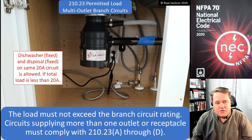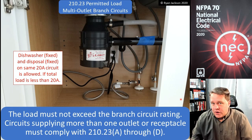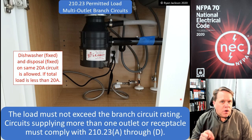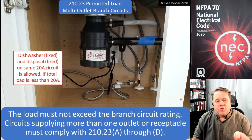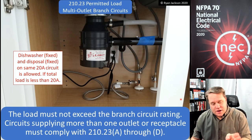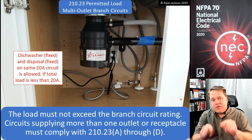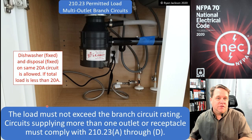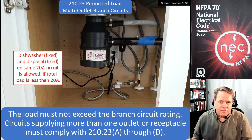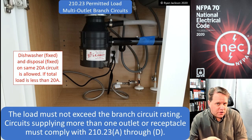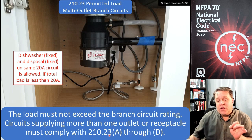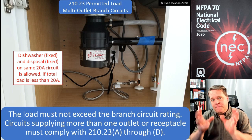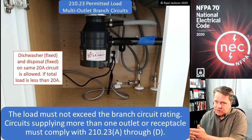What 210.23 says is this: the load must not exceed the branch circuit rating, first and foremost. Circuits supplying more than one outlet or more than one receptacle must comply with 210.23(A) through (D). However, for just a dishwasher and a disposer — both fixed equipment and nothing else on the circuit — subsections (A) through (D) don't apply. The question is answered by that one sentence: the load must not exceed the branch circuit rating. Just add the two nameplates together.